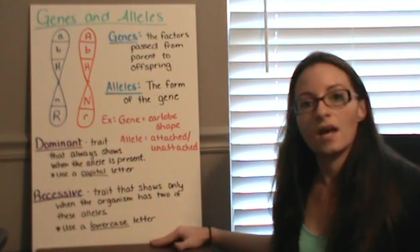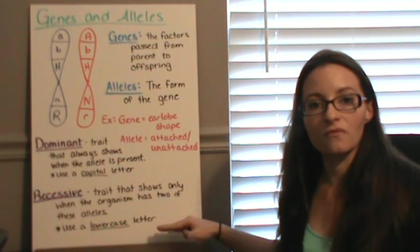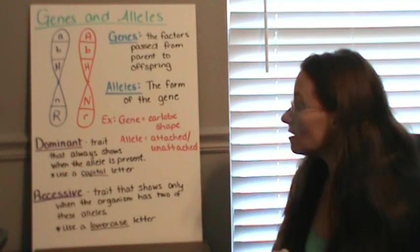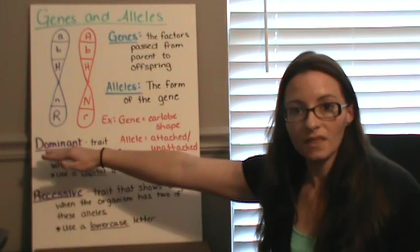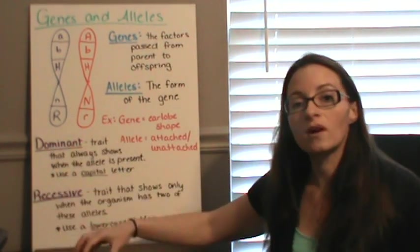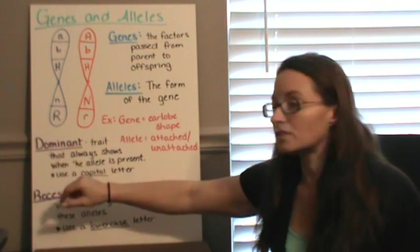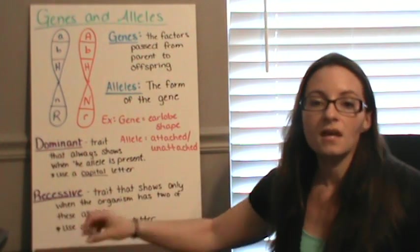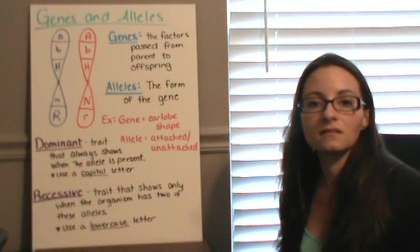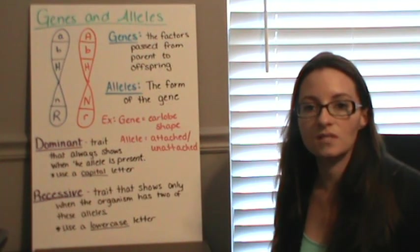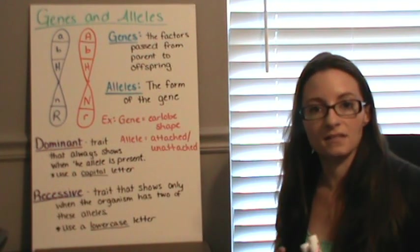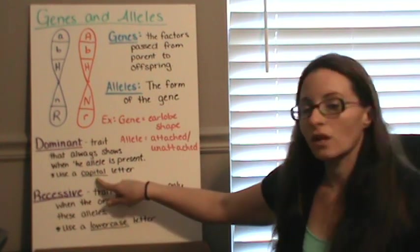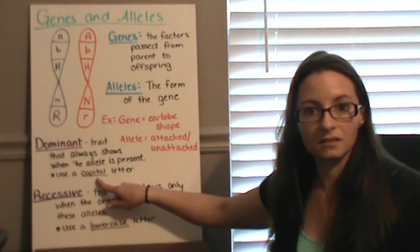So let's talk two other vocabulary words that deal with this before we get into pairing of genes or pairing of alleles. So we have two forms of a gene. You can have a dominant allele or you can have a recessive allele. A dominant allele is the allele that will always be shown, the trait that will always be shown if you have that allele. And we use a capital letter to represent dominant alleles.